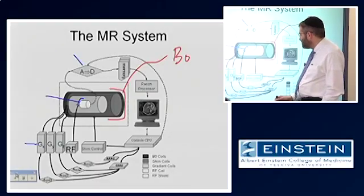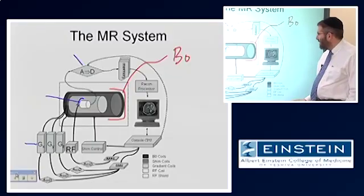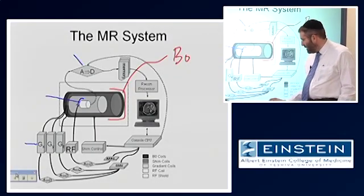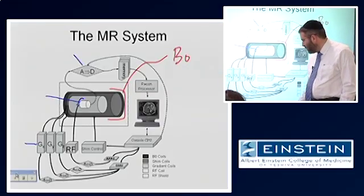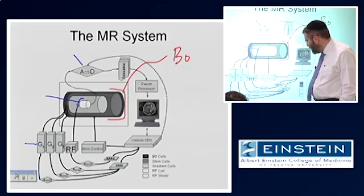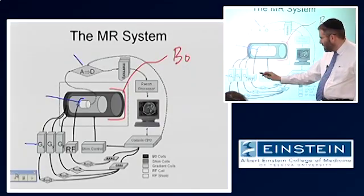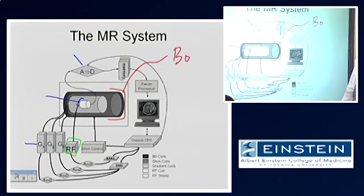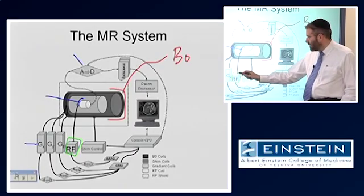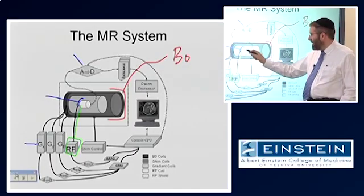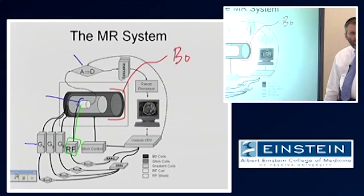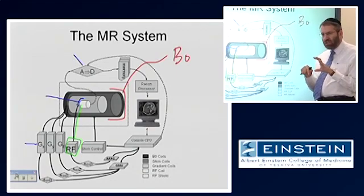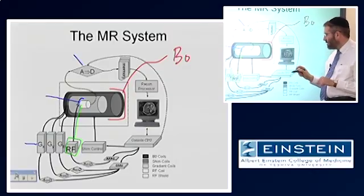and to generate the signal, we need our radio frequency system, which is basically this thing called an RF amplifier, which generates current that is put into a coil, just a loop of wire, and it's essentially an electromagnet. We'll talk about that in a little bit more detail.